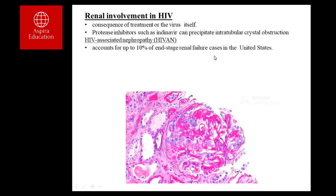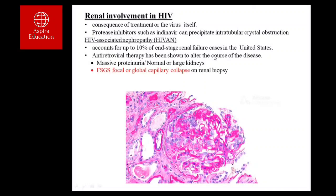HIVAN is a large cause of end-stage renal disease in the United States, especially in those of African-American descent. Antiretroviral therapy (ART) is found to alter the course of the disease, as the virus itself is responsible. These patients can present with nephrotic syndrome, large kidneys on scan, or worsening kidney function. Biopsy shows focal segmental glomerulosclerosis (FSGS). There is pink sclerosis in the mesangium with progressive collapse of capillaries — which is why this pathology is also called collapsing glomerulopathy. Key features include slightly elevated urea and creatinine with normal blood pressure.